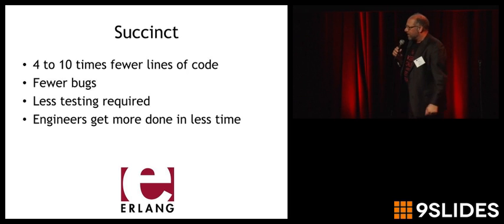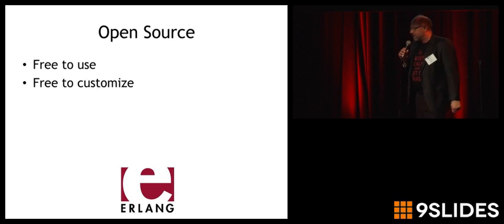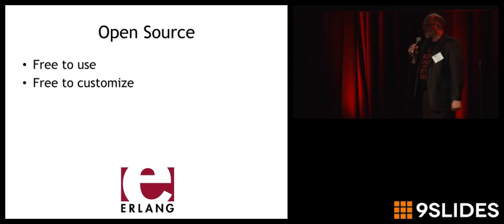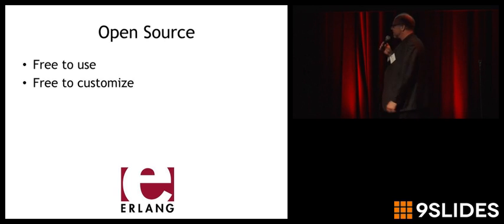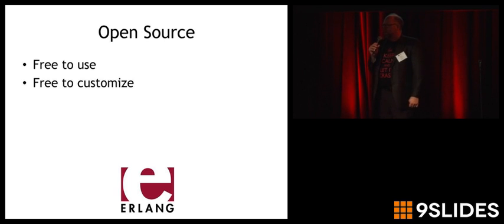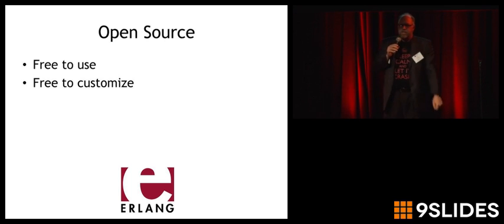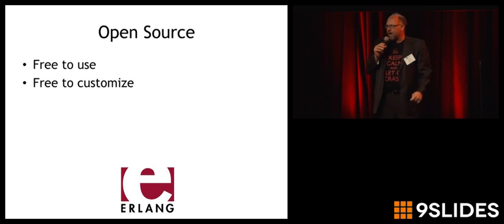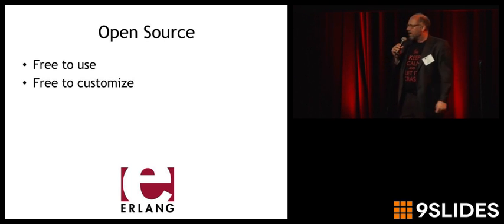Erlang is also a very succinct language. There are four to ten fewer lines of code required in an Erlang program versus C and Java. This means fewer bugs, less testing required, and your engineers can get more done in fewer hours.